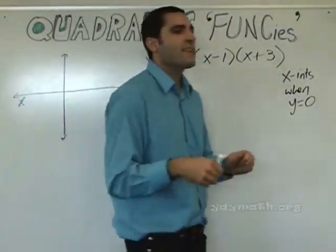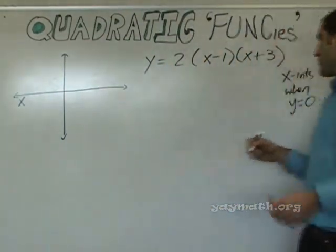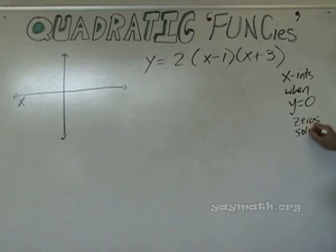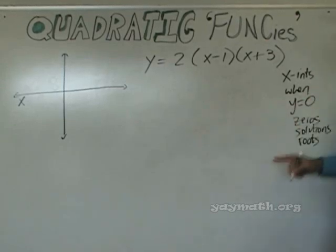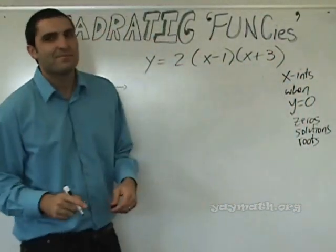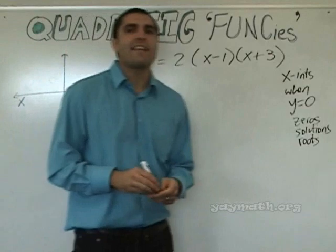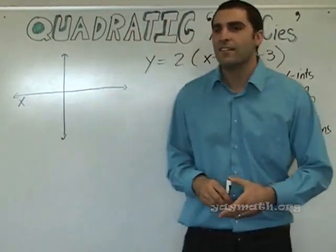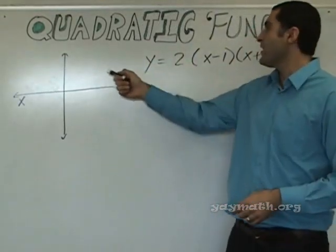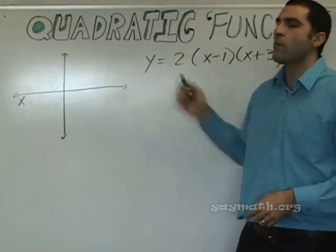What's another word for x-intercepts? Zero solutions. Let's put those down. Zero solutions are roots. And so, as Tampa Bay said, the x-intercept is when y equals 0.